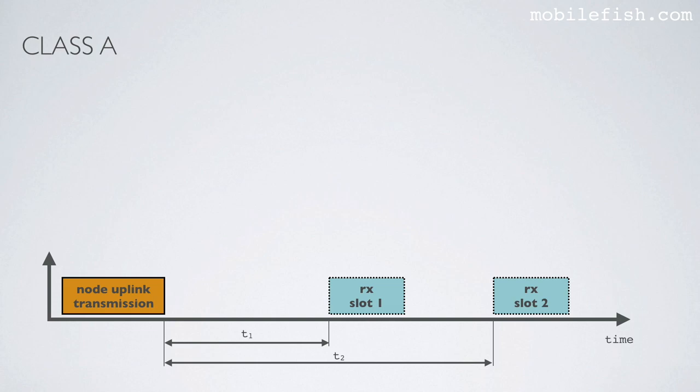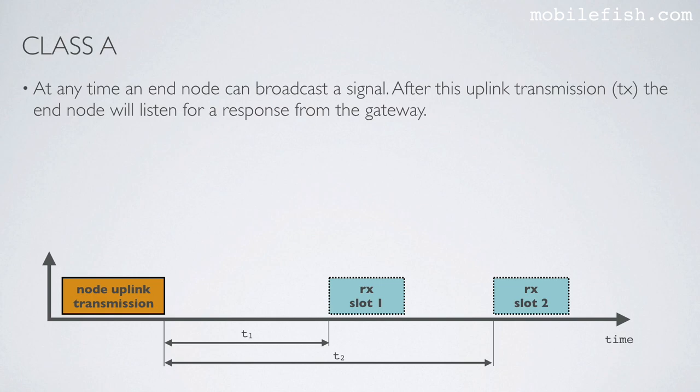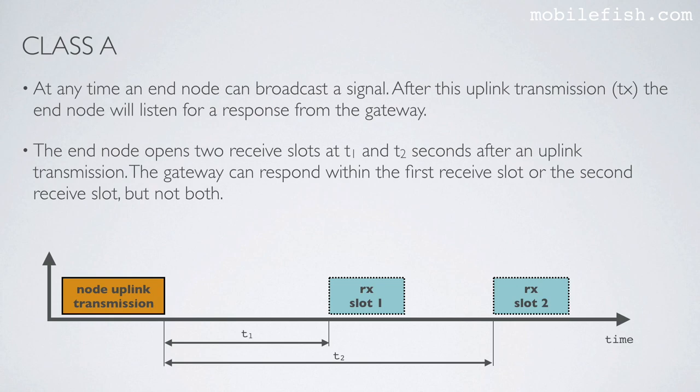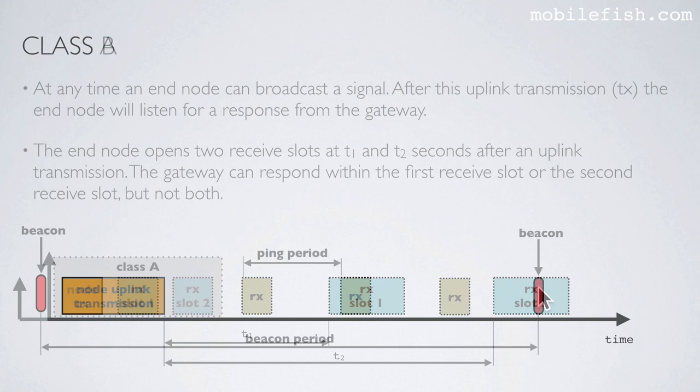Now let's look at these device classes in detail. First, let's start with Class A. At any time, an end node can broadcast a signal. After this uplink transmission, the end node will listen for a response from the gateway. The end node opens two receive slots at T1 and T2 seconds after an uplink transmission. The gateway can respond within the first receive slot or the second receive slot, but not both.